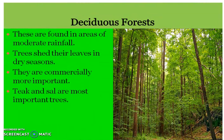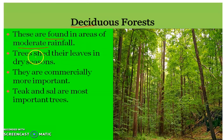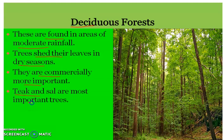The next type of forests are Deciduous forests. They are found in areas of moderate rainfall — not very less and not very heavy — generally between 70 cm and 200 cm. Trees shed their leaves in the dry season to reduce transpiration, which is a type of adaptation. Deciduous forests are commercially more important because Teak and Sal are the most important trees found in them.